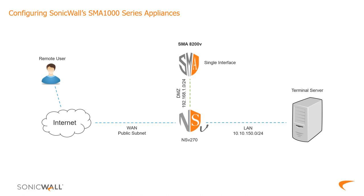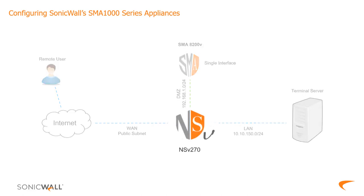The network architecture I have my 8200B deployed into is pretty straightforward. I have the appliance installed in a DMZ off of an NSV270, which has my terminal server sitting behind it on the LAN. There are different ways of integrating the appliance into an existing network, which the admin guide explains well. I chose this method because it was simplest to deploy into my lab. Note that I did have to configure some access rules on my NSV270, and your firewall may also need additional configuration to make traffic flow between your internal network, the SMA 8200B, and your VPN users.